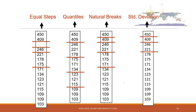Now, which one is the right data classification? We know that for the same data, using different classification methods will produce different results. The answer is there is no absolutely right one and no absolutely wrong one — it really depends on the topic or the story you want to tell from your map. For example, if you want to compare population change over different years, you may want to use equal steps to keep comparisons consistent.